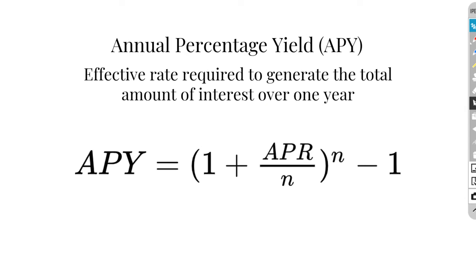What we're essentially doing with annual percentage yield is converting our compound interest for one year back into a simple interest form, where if we applied all of the interest at one time that's earned through compounding, it would be our APY. We're just talking about the percentage here — not a dollar amount. We only want the amount of interest earned in a year. Notice that what we're essentially doing in this formula is taking our compound interest formula and setting T equal to one. We can also find our APY by finding the amount of interest earned in one year and dividing that by the principal amount.